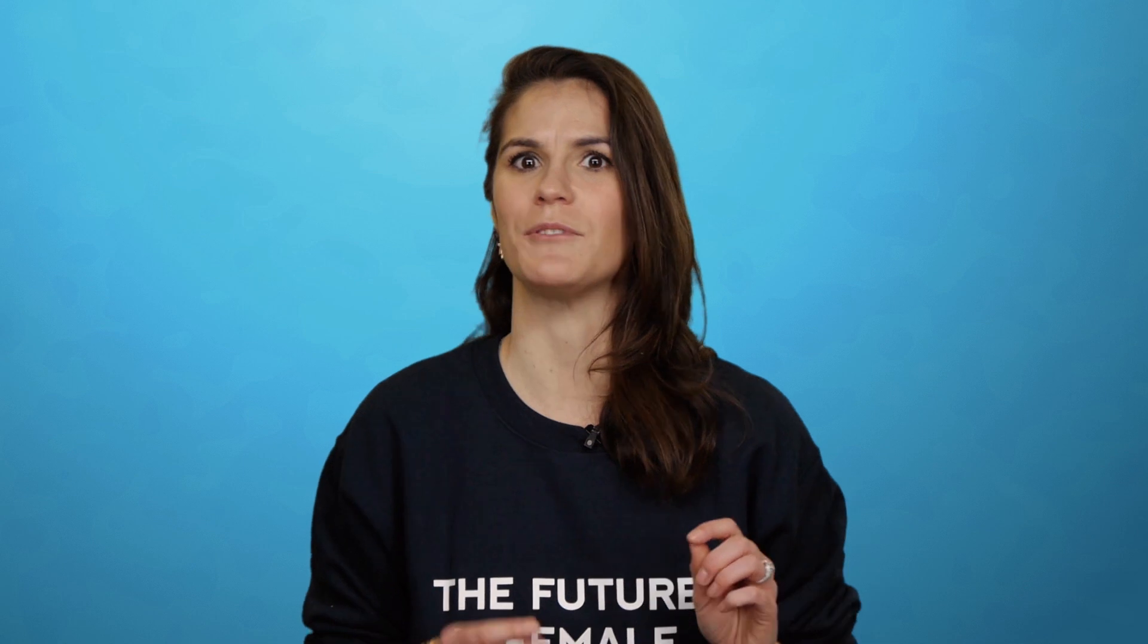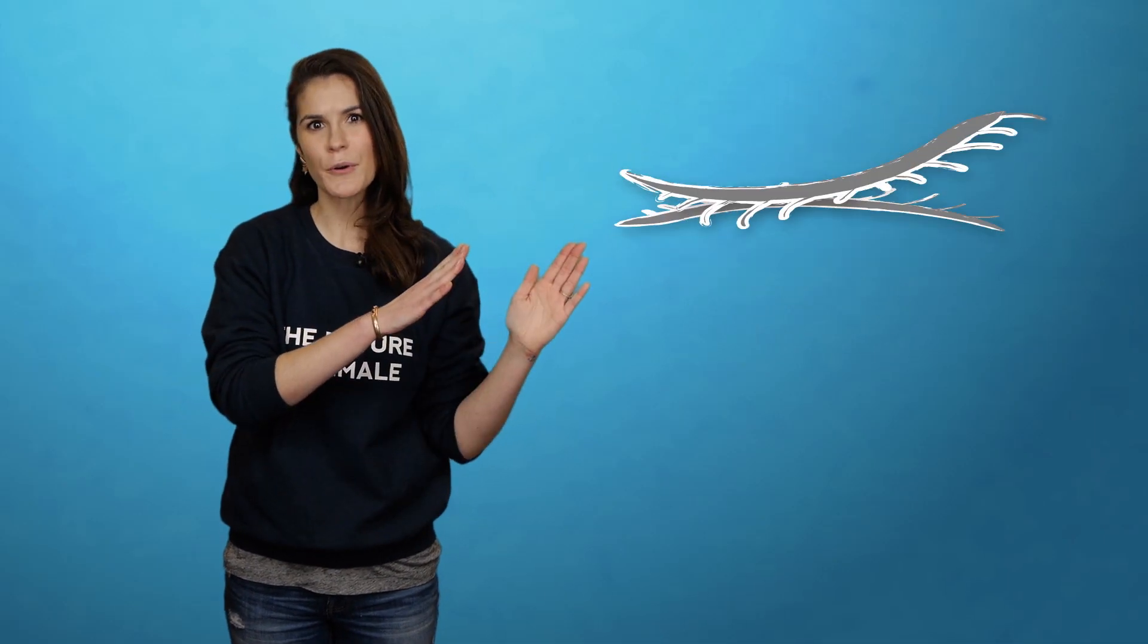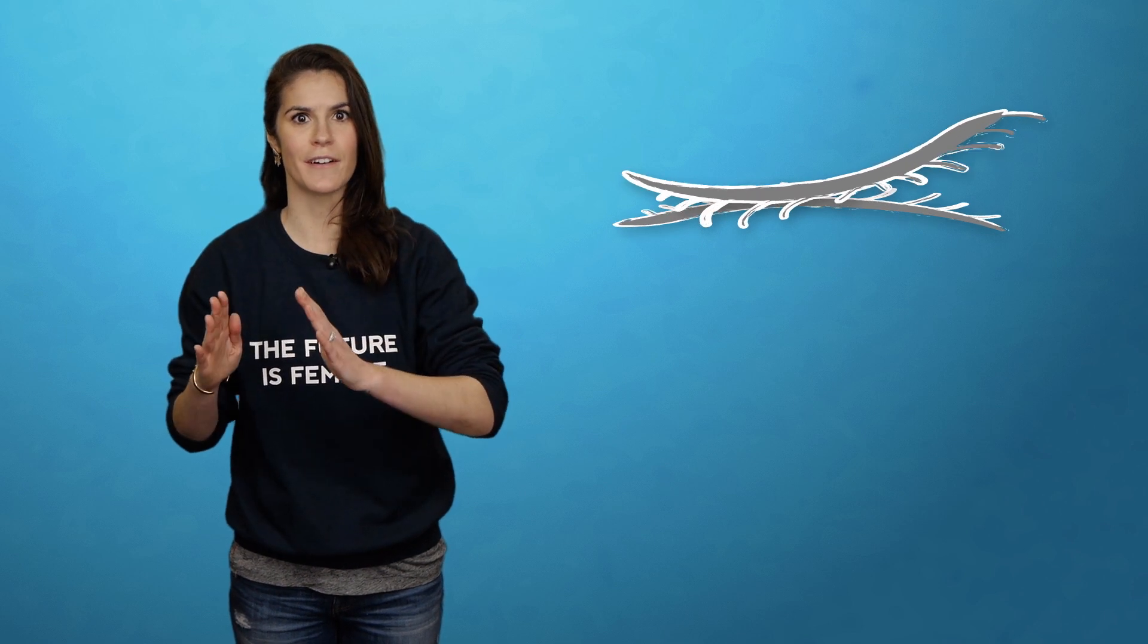When you blink, your entire eyelid doesn't close simultaneously. It shuts like a meaty clapperboard from the outer corners of your eyes inward toward your nose, and your tear film gets pushed along by the motion.